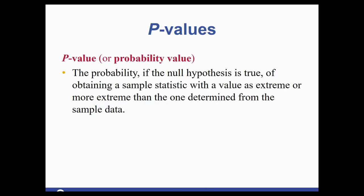The p-value is the probability, if the null hypothesis is true, of obtaining a sample statistic with a value as extreme or more extreme than the one determined from our sample data. There are two different ways of solving hypothesis tests: one using p-values, and another using rejection regions.